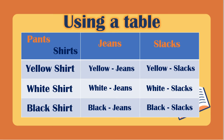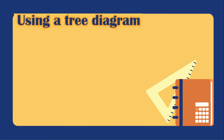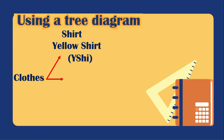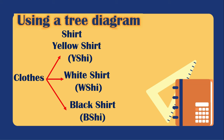Next, let us use a tree diagram. From the clothes, we have the shirts: the yellow shirt, the white shirt, and the black shirt. We will use YShi for yellow shirt, WShi for white shirt, and BShi for black shirt.